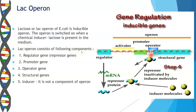Lactose operon consists of the following components: the regulatory gene, also called as the repressor gene; a promoter gene; an operator gene; structural genes; and the inducer. This inducer is required by the operon but it is not a component or a part of the operon. Let us see each of these in a little bit of detail.